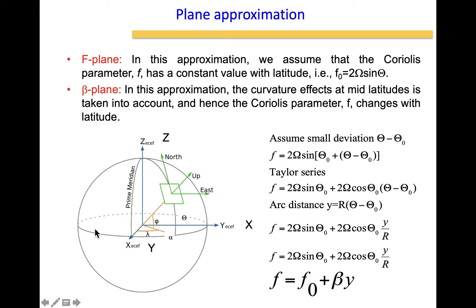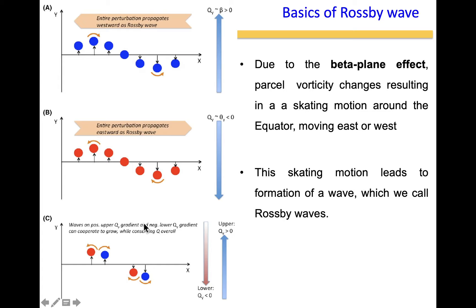The presence of the beta plane causes Rossby waves to develop at mid-latitude and at the equator. The beta plane effect has the tendency to change the vorticity, resulting in an oscillating motion around the equator — slightly to the north and slightly to the south. Once parcels oscillate up and down, they also have a tendency to move either westward or eastward. That is how the wave develops: a parcel at the equator moving up and down because of the beta plane effect results in the formation of a Rossby wave, which then travels longitudinally either west or east.